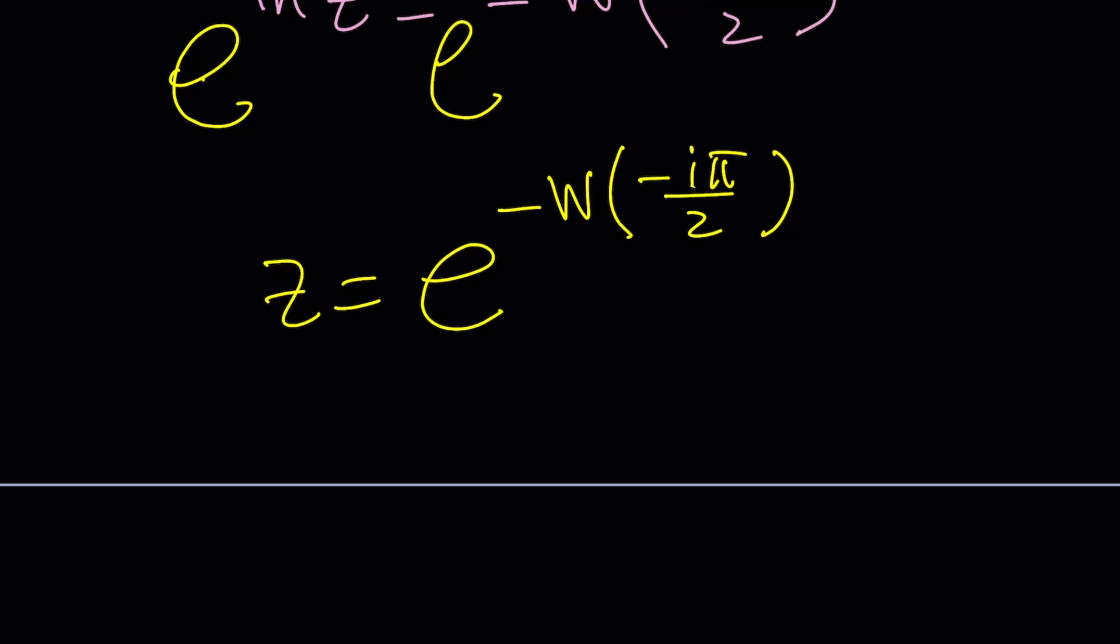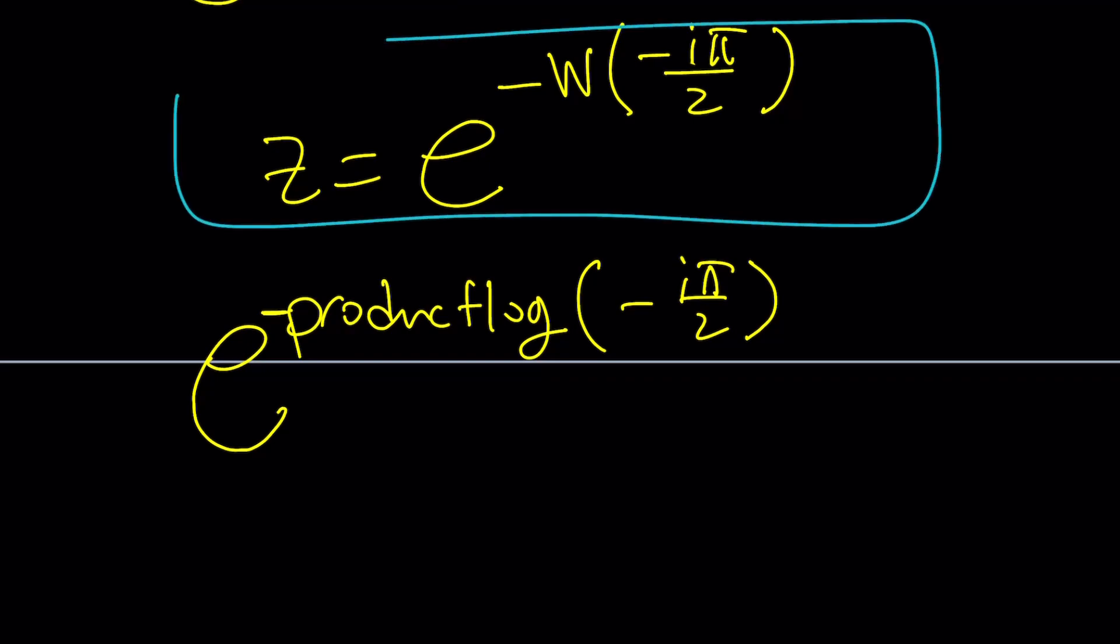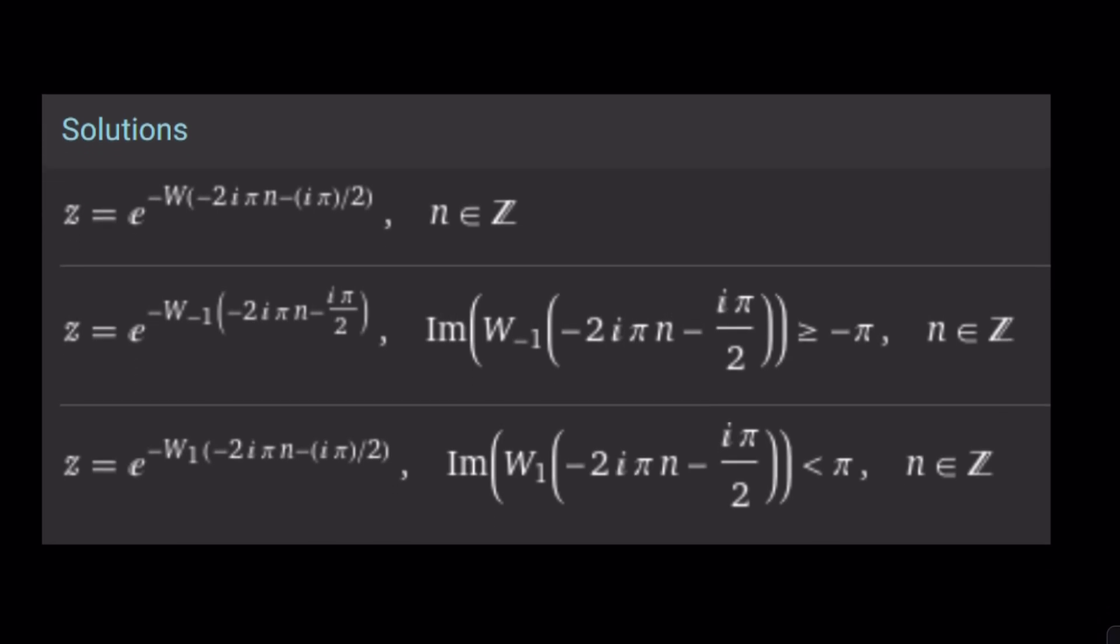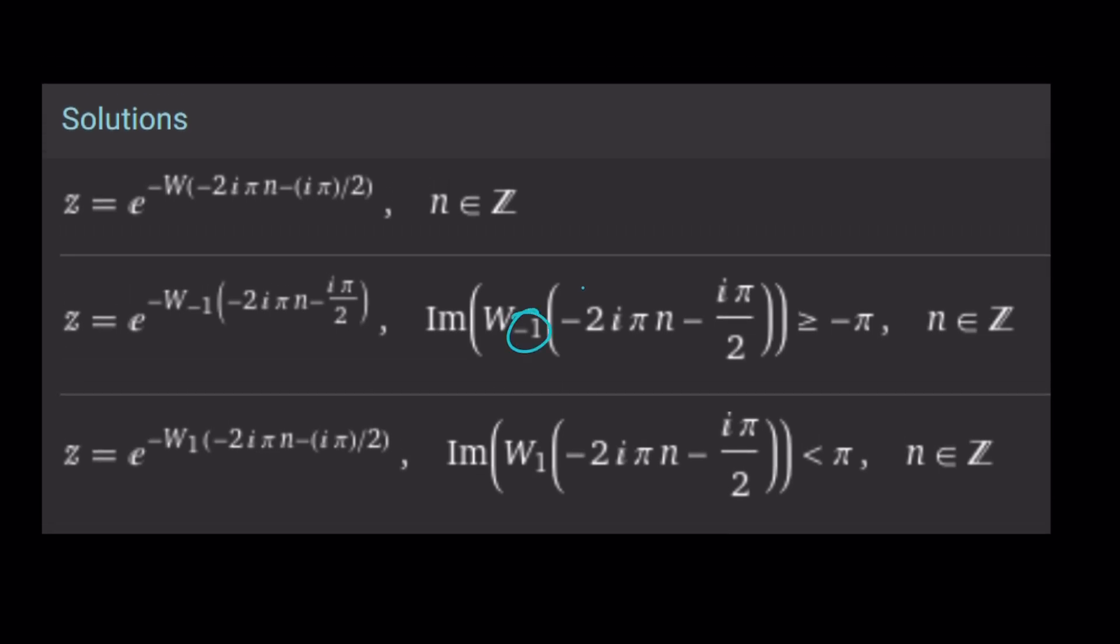Just put it into Wolfram Alpha as product log of negative i pi over 2. It's going to give you a numerical value and you could even put the e at the bottom and put a minus sign. Let's check it out from Wolfram Alpha. I already did it. And these are the solutions. And again Wolfram Alpha obviously is considering the 2 pi n. And if you consider 2 pi n here of course that's what you're going to get. But what about the second and the third solutions? That's going to be pretty interesting because Wolfram Alpha is considering the different branches of the Lambert's W function.